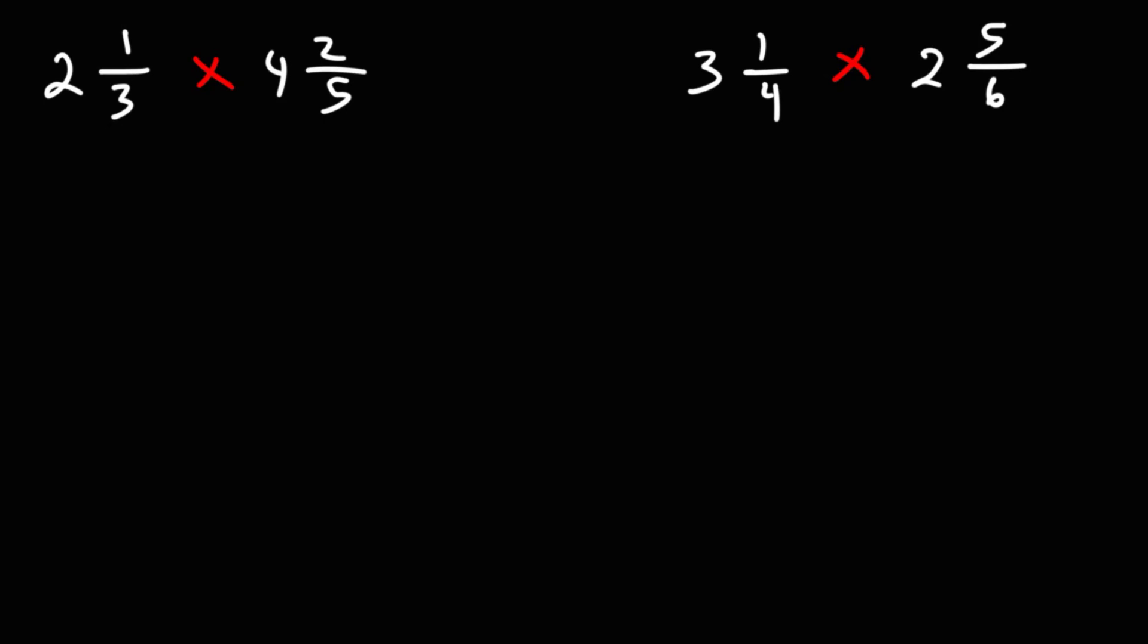Let's talk about how we can multiply two mixed numbers together. In order to multiply mixed numbers, we need to convert them to an improper fraction.